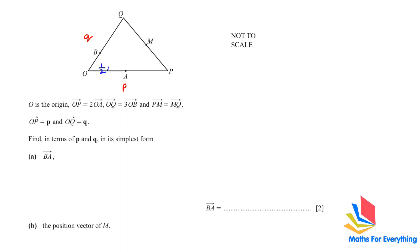Half p. And the other thing that is given to us is OQ is 3 times OB. So, OB is one third of OQ which is one third q. Okay. So, this is what we have now.